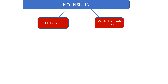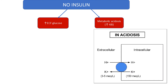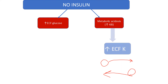What does metabolic acidosis do? When you have a lot of hydrogen outside because of the acidosis, this is going to drive hydrogen inside the cell in exchange for potassium. So more intracellular potassium moves outside the cell, increasing extracellular fluid potassium — that's to maintain cation balance.